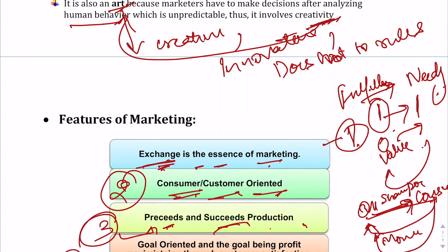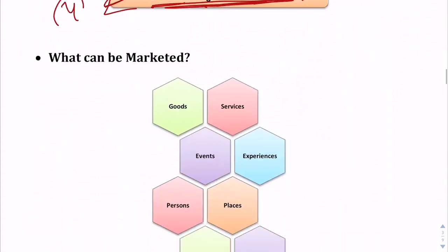The last feature: marketing is goal oriented, and the goal is profit maximization through customer satisfaction. Since a marketer creates a profitable venture by identifying and fulfilling consumer needs, the goal is to maximize customer satisfaction. Only when the customer is satisfied can the marketer achieve profits — so maximizing consumer satisfaction is the basic goal of marketing.